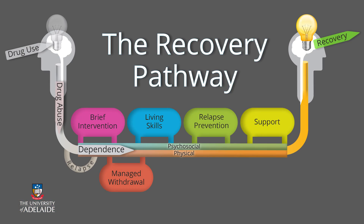The compulsive nature of dependent drug use means that most people find it difficult to complete the withdrawal process. Substitution treatment is sometimes an option, involving the prescription of a drug that is similar in action to the drug of dependence, but with less risk of harm.